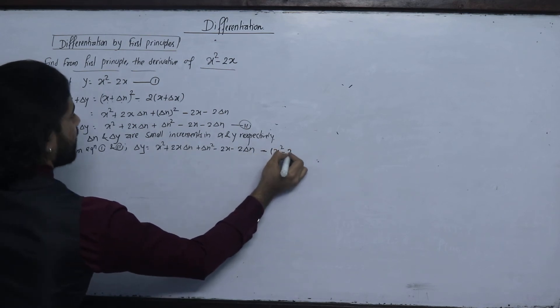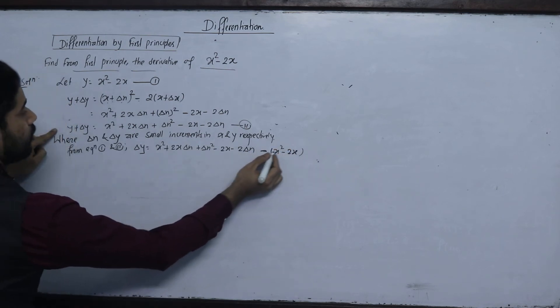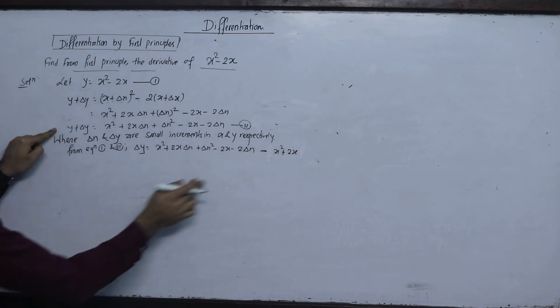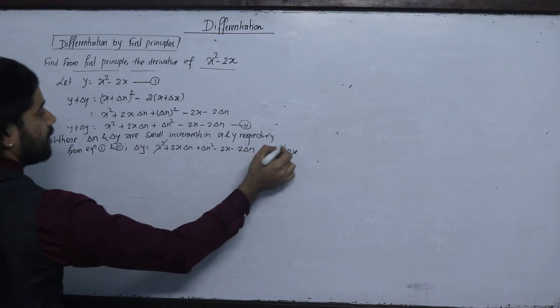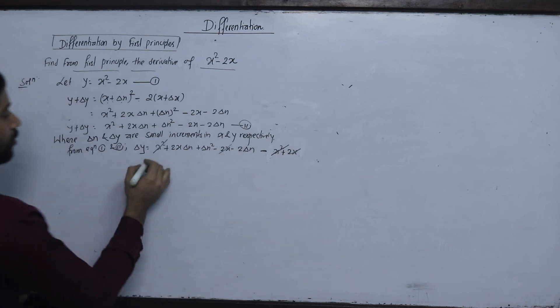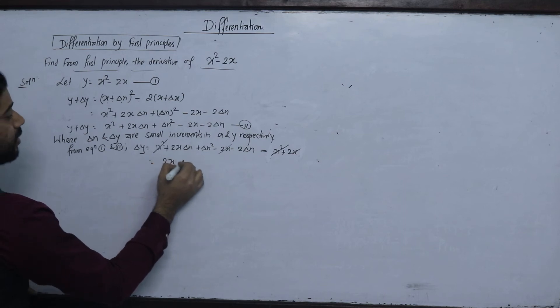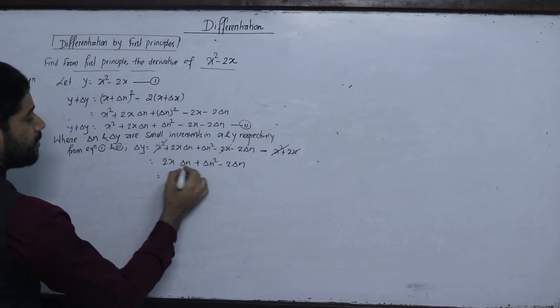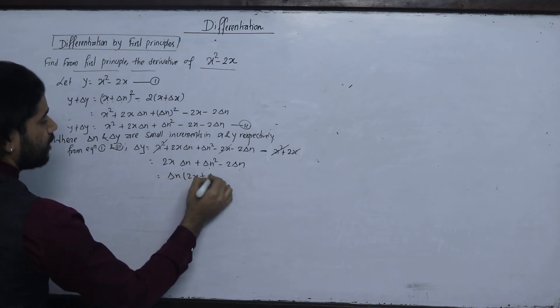x square minus 2x minus 2x minus 1 minus 1 plus 1 minus x square. x square cancel out and 2x cancel out. 2x del x del x square minus 2 del x, the x square minus 2x plus del x minus 2 dot x del x.